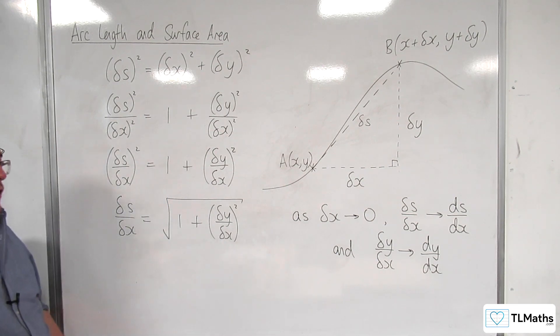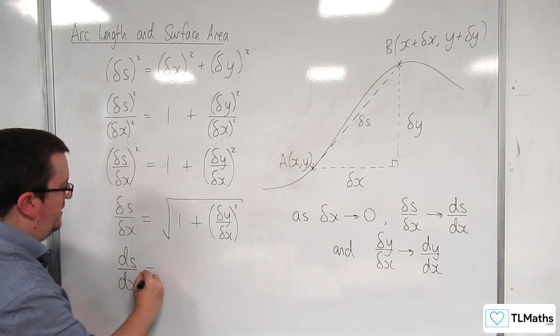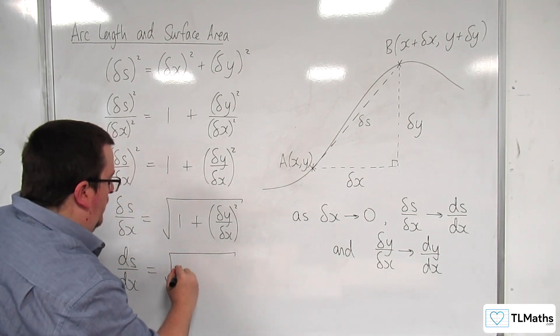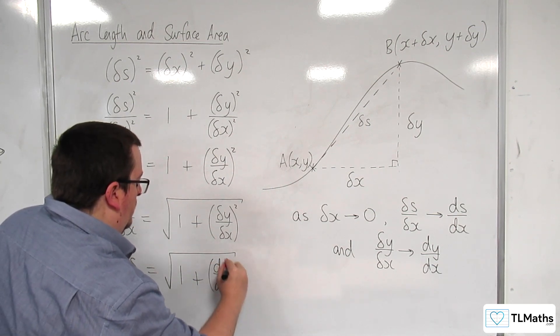And so as delta x tends to 0 what we find is that ds by dx is going to be equal to the square root of 1 plus dy over dx squared.